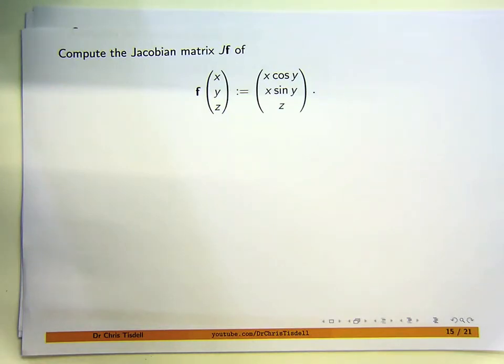Here's an example from functions of several variables. We are given a vector-valued function f, and we're asked to compute the Jacobian or the Jacobian matrix of this function.